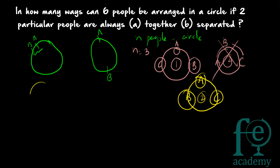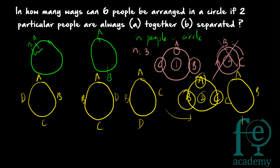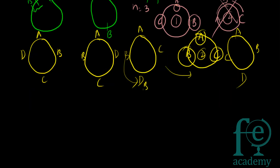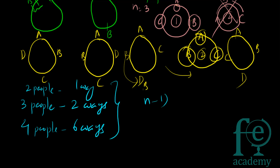For 4 people, you can work out the arrangements: A-B-C-D, A-B-D-C, A-C-B-D, A-C-D-B, A-D-B-C, and A-D-C-B — giving 6 total ways. For 2 people there is only 1 way, for 3 people there are 2 ways, and for 4 people there are 6 ways.